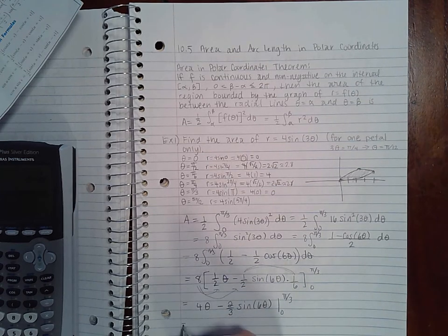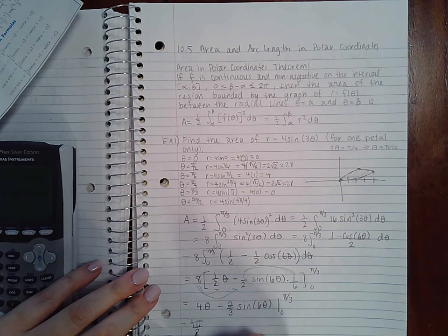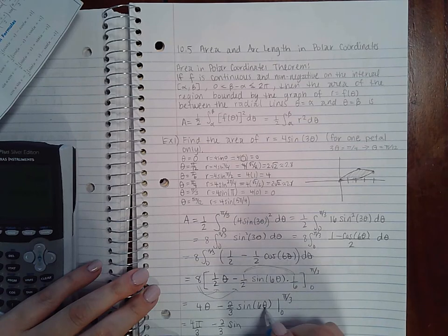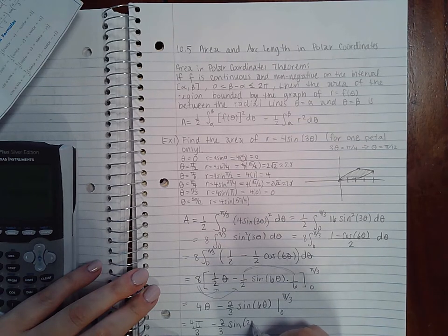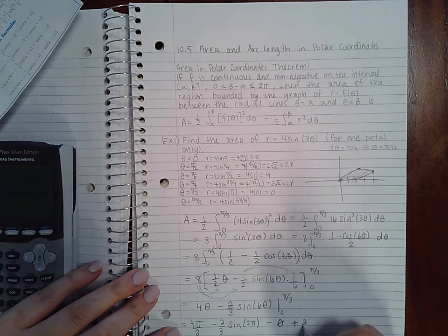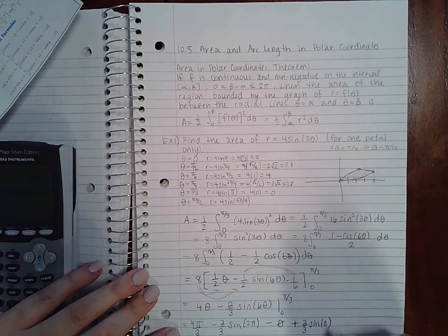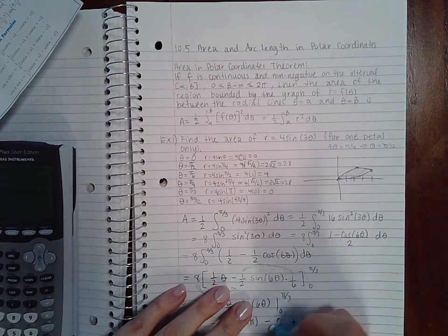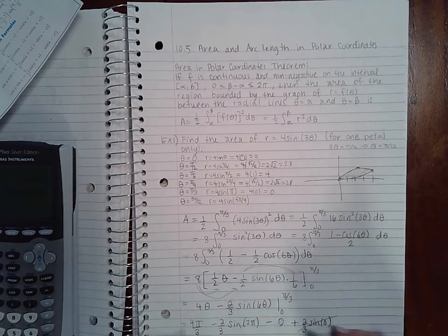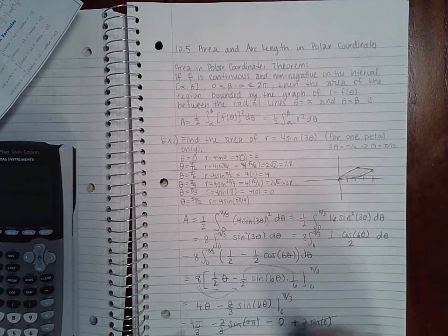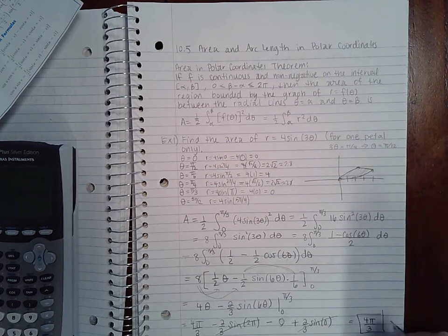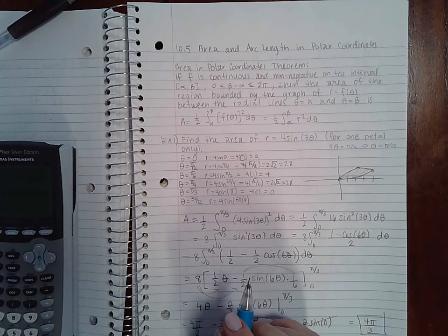So then if I evaluate that I get 4π/3 minus (2/3)sin(2π) minus [0 + (2/3)sin(0)]. Well sin(0) is zero and that should be a zero. So then I just end up with this. Sin(2π) is zero so we end up with 4π/3. That is the area of one of those petals.